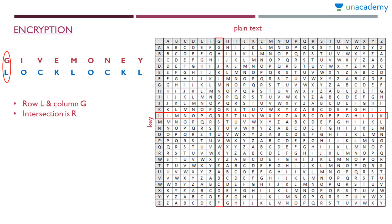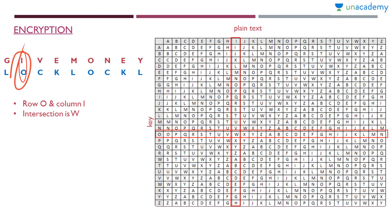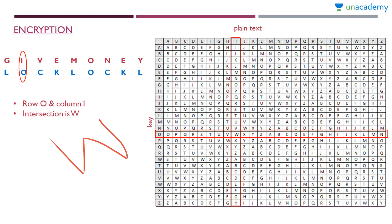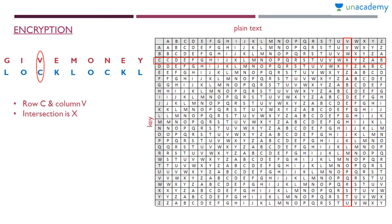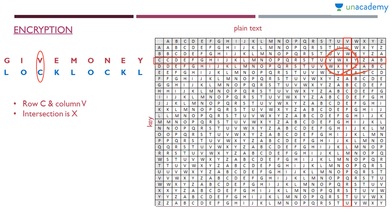R is the cipher text letter for the first pair. The next pair is I (plain text) and O (key). Row O and column I — the intersection is W. So W is the corresponding cipher text letter. Next is V (plain text) and C (key). Row C and column V — the intersection is X, so X is the cipher text letter.